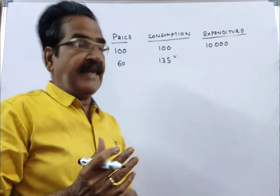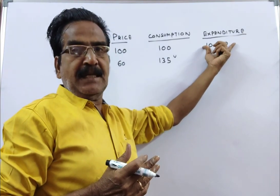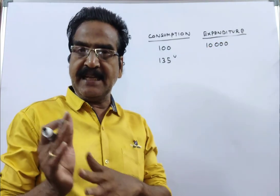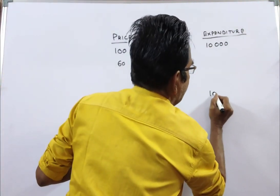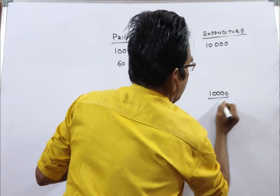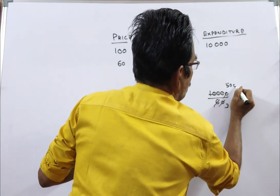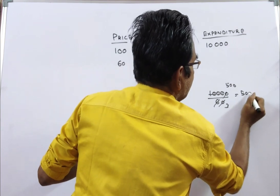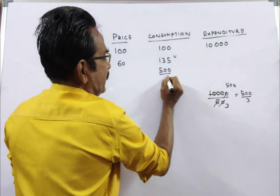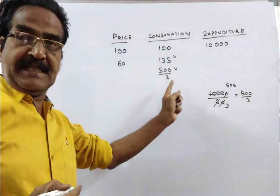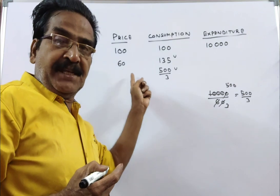Friends, in fact, with the same expenditure of 10,000, how many units will he get at 60 rupees a unit? So, 10,000 divided by 60 gives 500 by 3 units. He will get 500 by 3 units with the same expenditure at 60 rupees a unit.